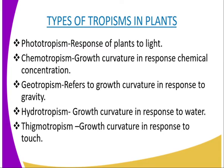We have another type of tropism in plants known as thigmotropism, which involves growth curvature in response to touch. For example, some plants lack supportive stems that cannot support themselves, so they develop thigmotropism such that they can support themselves through other plants using what we call tendrils. Plants like the passion fruit use their tendrils to climb other plants, and these tendrils have positive thigmotropism because they are able to detect other plants and grow around them.